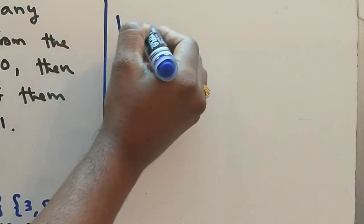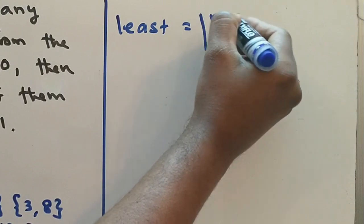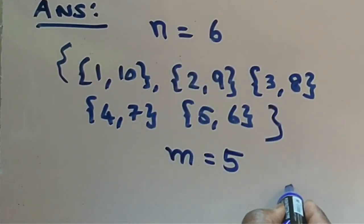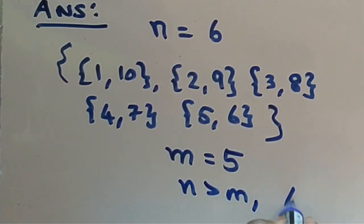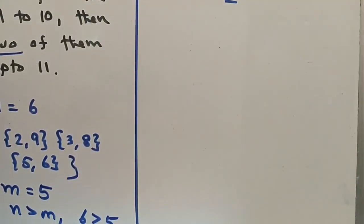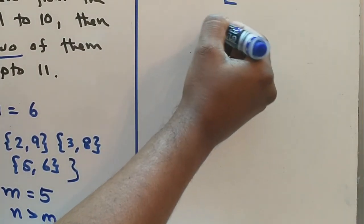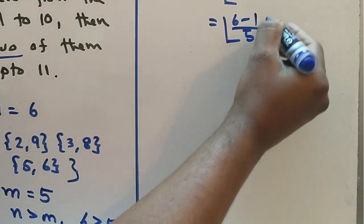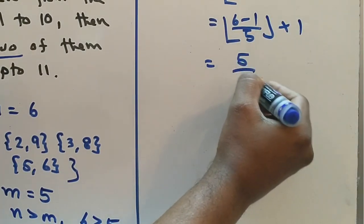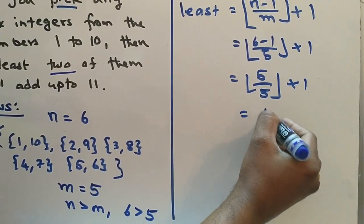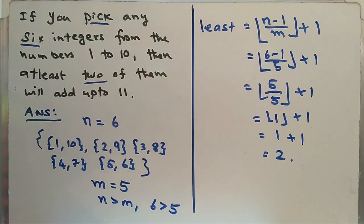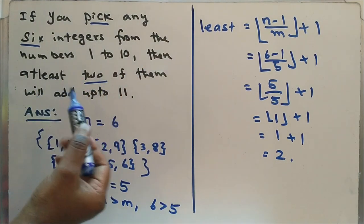So at least how many of them will add up to 11 we will find it. The least number is equal to... Now the pigeon hole principle, ⌊(n-1)/m⌋ + 1. Now 5 is... n is greater than m, that is 6 is greater than 5. We can use a pigeon hole principle. Now the least number is equal to ⌊(n-1)/m⌋ + 1. Now we can apply the principle. n is equal to 6 minus 1 divide by this m, 5, plus 1. So 6 minus 1 is 5 by 5 plus 1. So 5 by 5 is 1, the integer value 1 is equal to 1. So 2 of them will be add up to 11. At least 2 of them will be add up to 11. This is proved.